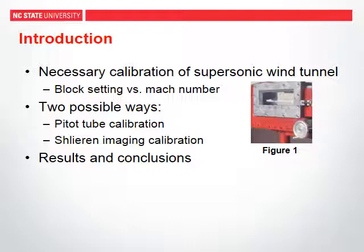The higher the block setting number corresponds to a higher cross sectional area upstream, which should correspond to a lower Mach number. In these experiments we used two different techniques: the pitot tube calibration, which measured pressure differentials, and the Schlieren imaging system, which took pictures of the shock wave off of the wedge and measured angles.